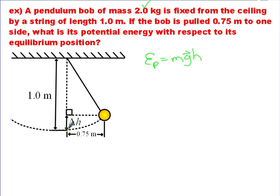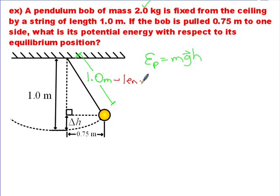What we are given is the length of the string — 1 meter — which is the distance between the equilibrium position and the anchor point at the ceiling. The key insight is that this distance along the string when pulled to the side is also 1 meter, forming a triangle drawn in with dotted lines. This triangle has a hypotenuse of 1 meter, the same as the length of the string, and that is going to be our key to solving this problem.